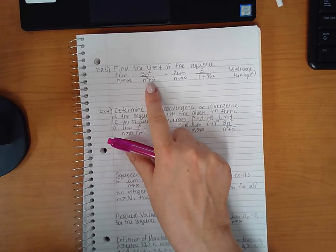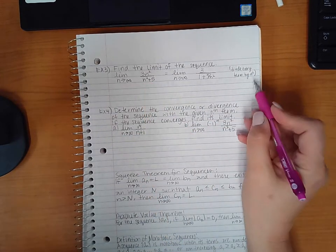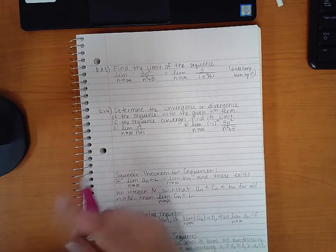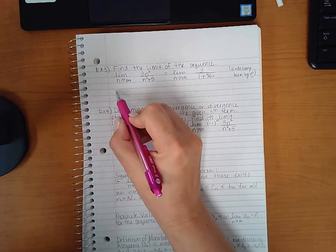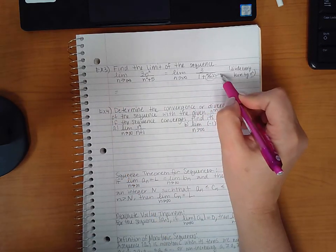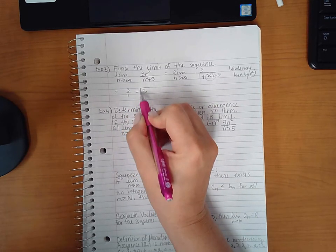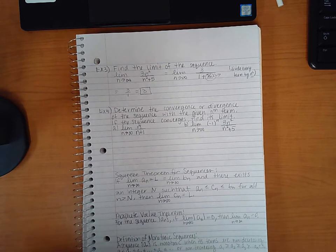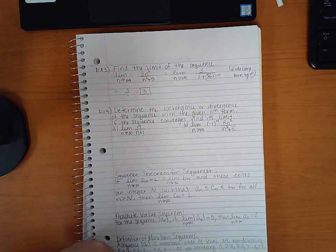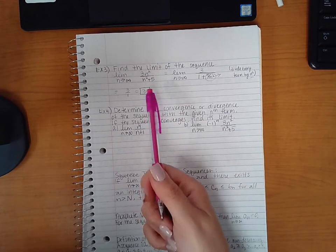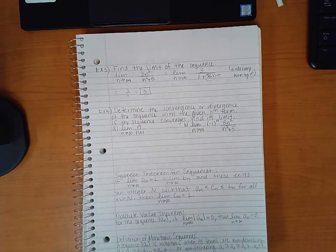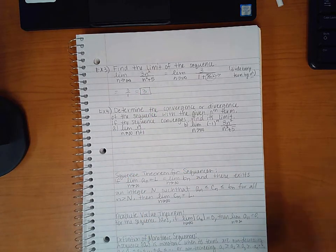You're always looking at the highest exponent in the denominator in order to determine what to divide by. Now when I take the limit, I get that this guy will go to zero but I'll still end up with three over one which is three. So if the computer asked me if it converges or not, I did get a real number so the sequence does converge and it converges specifically to three.